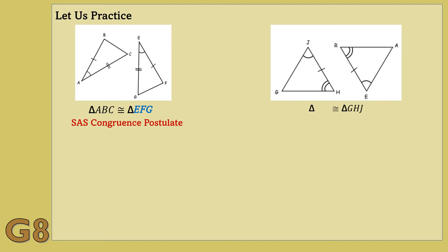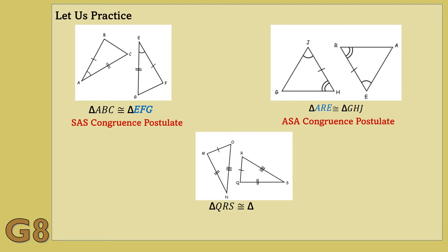Another figure: what triangle is congruent to triangle GHI? We have triangle ARE. And what postulate concludes that the triangles are congruent? We have ASA Congruence Postulate. How about this figure? What triangle is congruent to triangle QRS? It is triangle MNO. And what concludes the triangles to be congruent? The SSS Congruence Postulate.